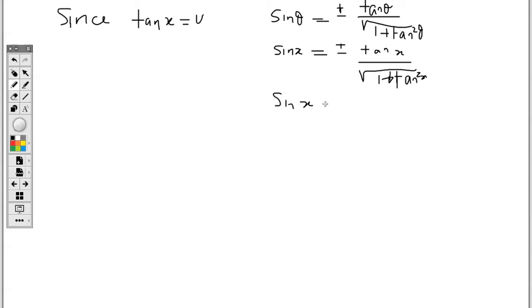Now I can replace tan x with v, so I will have v being replaced wherever I am seeing tan x.